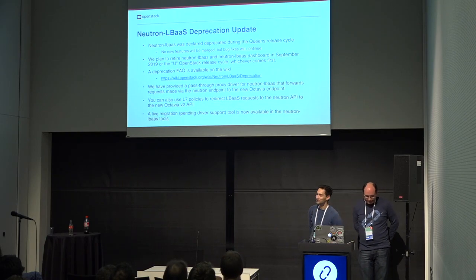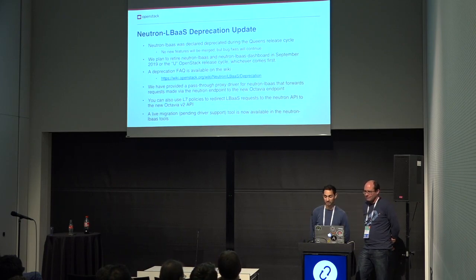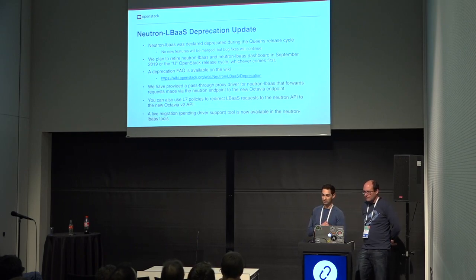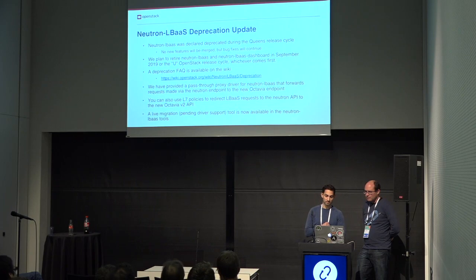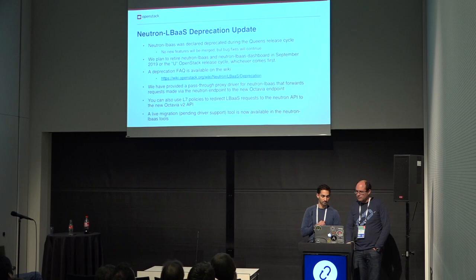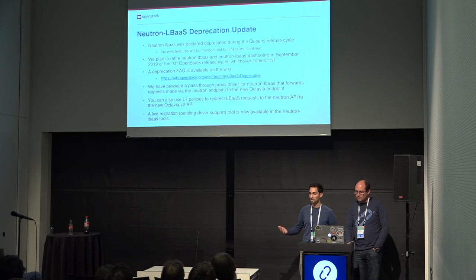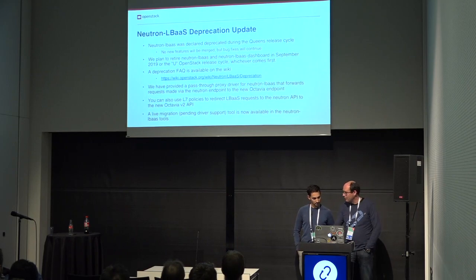Just to make sure you got the message: Neutron LBaaS is deprecated. It was deprecated in the Queens release cycle and we do not accept any new features, only bug fixes. We plan to retire it — as well as the Neutron LBaaS dashboards — in September 2019, or the U release cycle, whichever comes first. We've put together a page with FAQs where you can see how to migrate, and we gave a whole talk on that which we will refer you to.